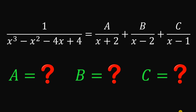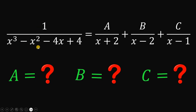Can you solve this math challenge? Here's the question. Solve for the values of A, B, and C given this equation: 1 over x cubed minus x squared minus 4x plus 4 equals A over x plus 2, plus B over x minus 2, plus C over x minus 1.